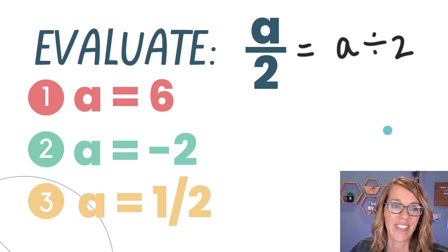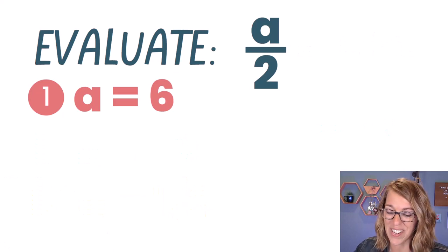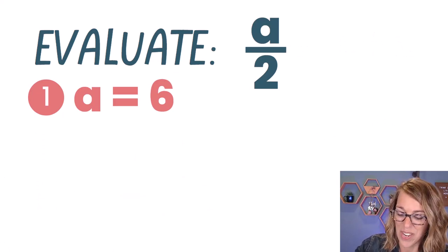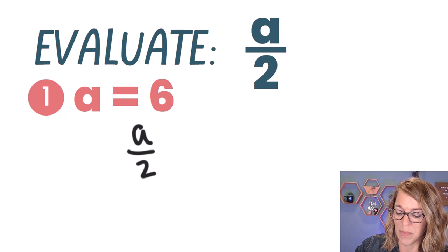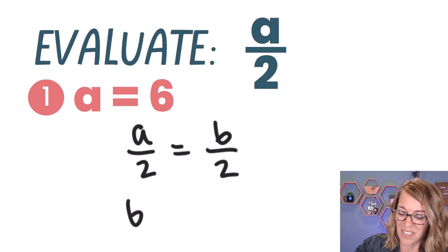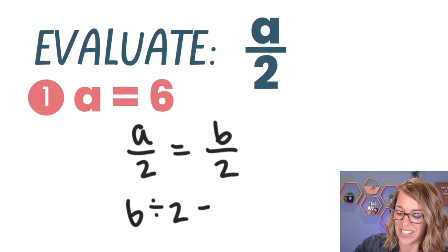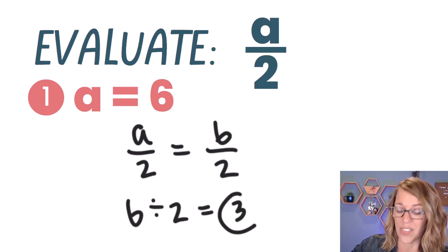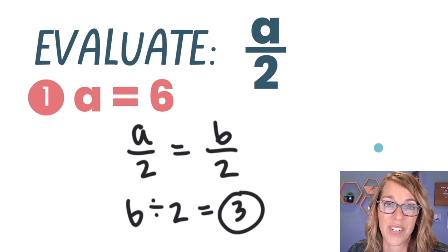I want to start with a equals six. So when a is equal to six, we get a over two, but I'm going to replace the a with a six. So that becomes 6 over 2. This is also six divided by two, and six divided by two is three. So the value there is going to be three.